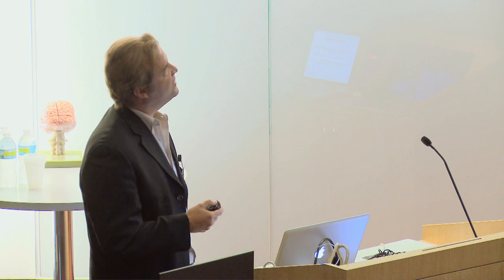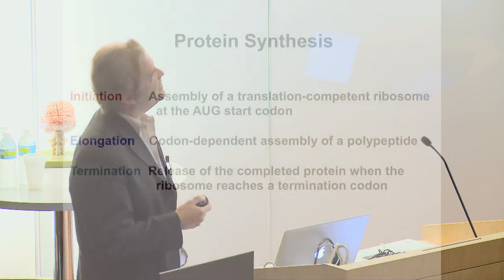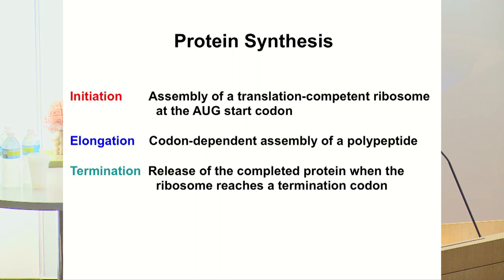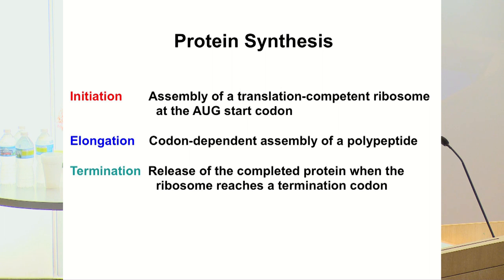Gene expression ends with the synthesis of protein — this is the ultimate step. Protein synthesis itself is a very complex process with three stages. The first is initiation, where the ribosome finds the sequence that tells it to start making a polypeptide chain. Then there's elongation, as the ribosome scans down that sequence and adds amino acids. When it comes to a sequence that tells it to terminate, it stops synthesis of the protein.